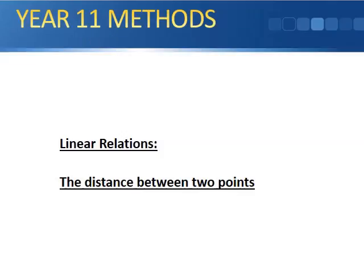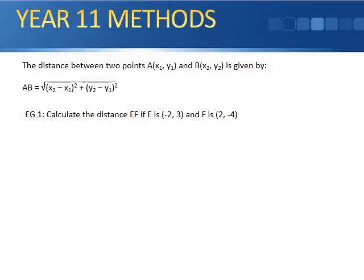Distance between two points. The distance between two points is given by this rule. I've called it AB because it's the distance between point A and point B.